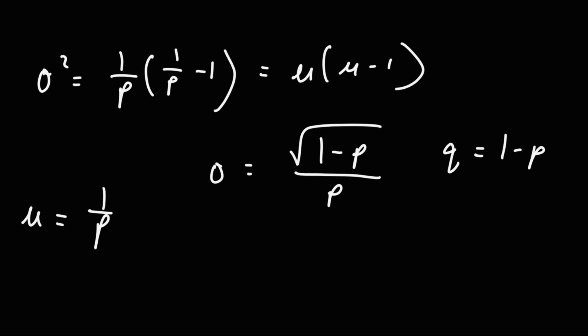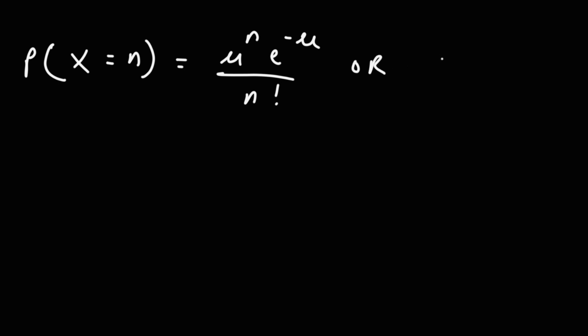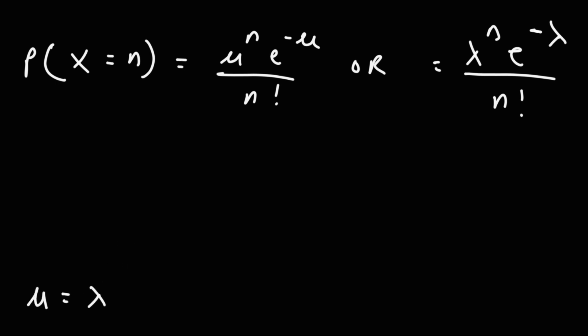So those are the formulas you need to know when dealing with a geometric distribution. Now let's talk about the Poisson distribution. To find the probability for this distribution, the probability that x is equal to n is going to be mu to the n times e to the negative mu, over n factorial. You might also see this formula written with lambda: lambda to the n times e to the negative lambda divided by n factorial. The mean mu is equal to lambda in this case.